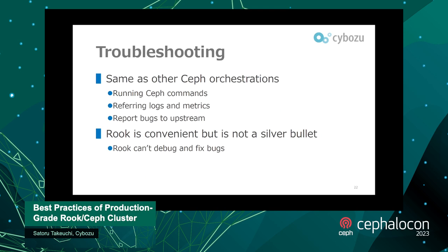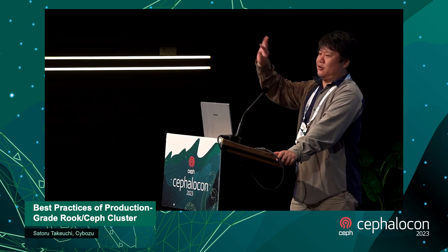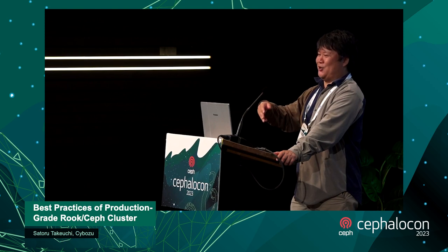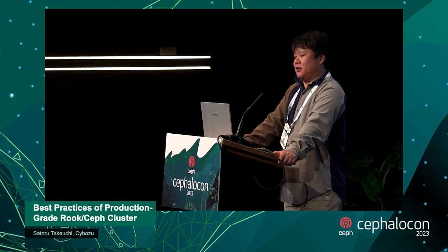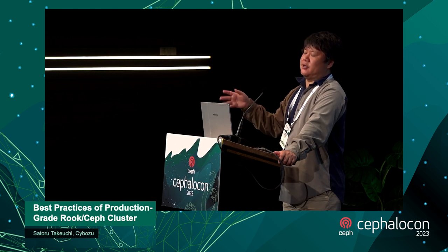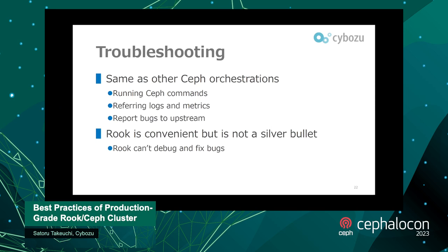About troubleshooting: I explained that everything is managed by Rook, but if trouble happens the convenience of Rook disappears and we should manage everything by hand. Troubleshooting is completely the same as with other Ceph orchestration — running Ceph commands, checking logs and metrics, reporting bugs upstream, and getting help from upstream developers or community members. Rook is convenient, but it's not a silver bullet — Rook can't debug and fix bugs, and Rook is not ChatGPT.